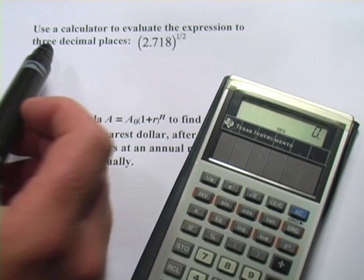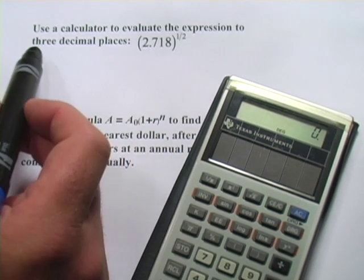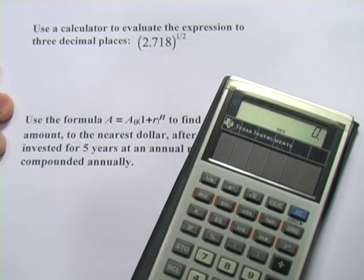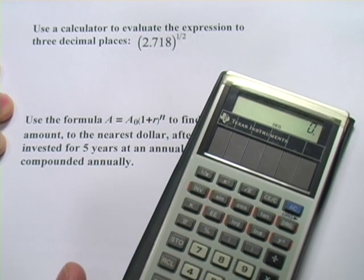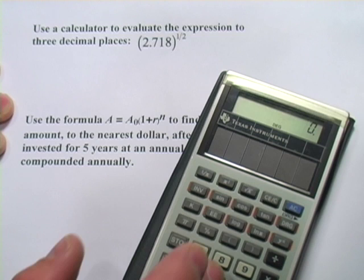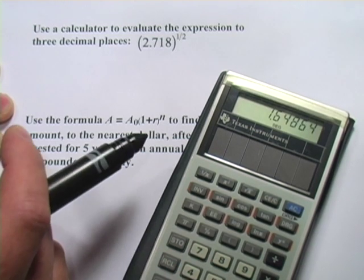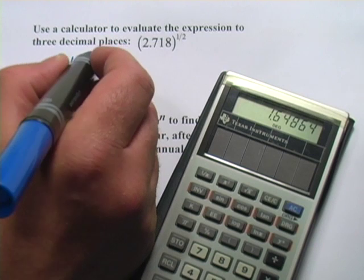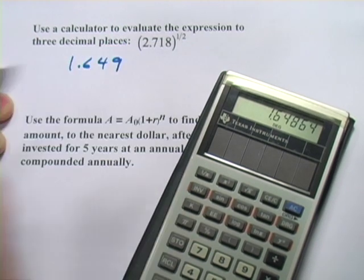So let's give that a try. It says use a calculator to evaluate the expression to three decimal places. We have 2.718 to the one-half power. So what I can do is type in 2.718 and then hit my y to the x and then .5 and equals. And I get 1.649, they want it three decimal places.